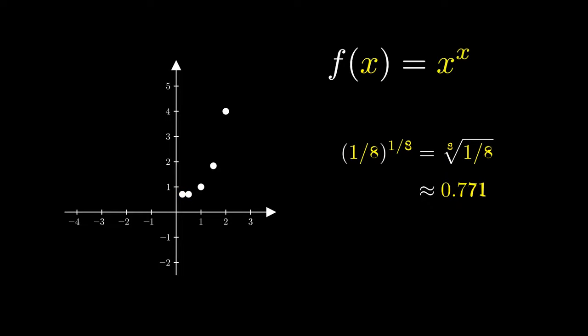This also works for the 1 8th power of an 8th. This time we take the 8th root instead. This gives us 0.771. Likewise with 3 over 8 to the 3 over 8. So far the calculation works relatively straightforward for fractions.